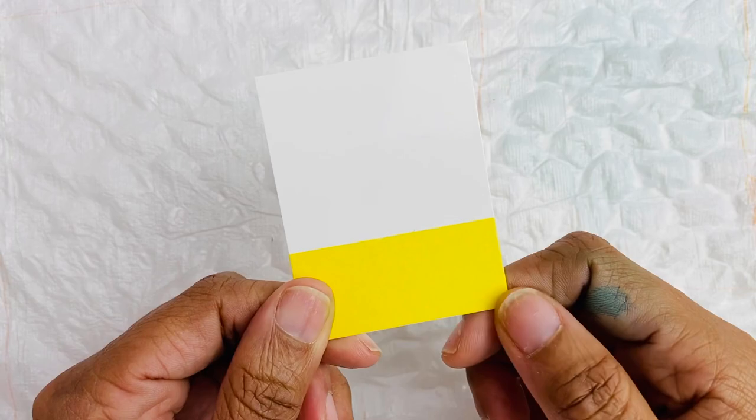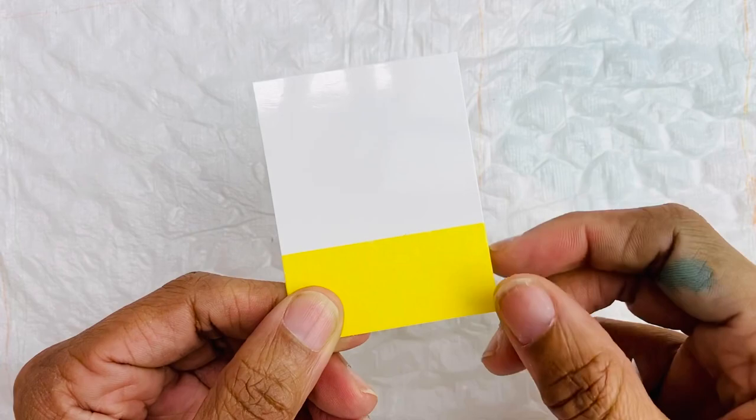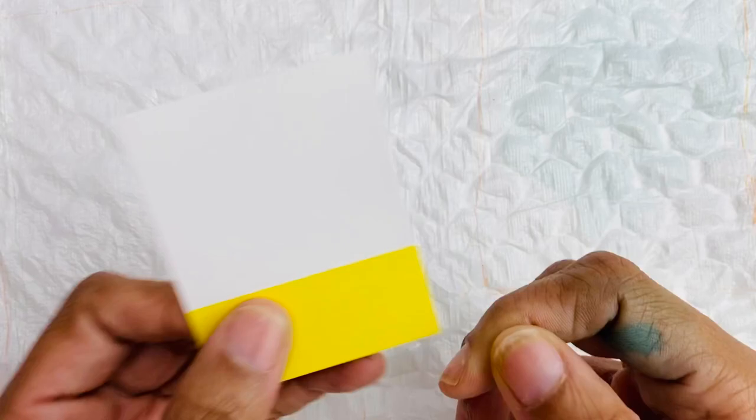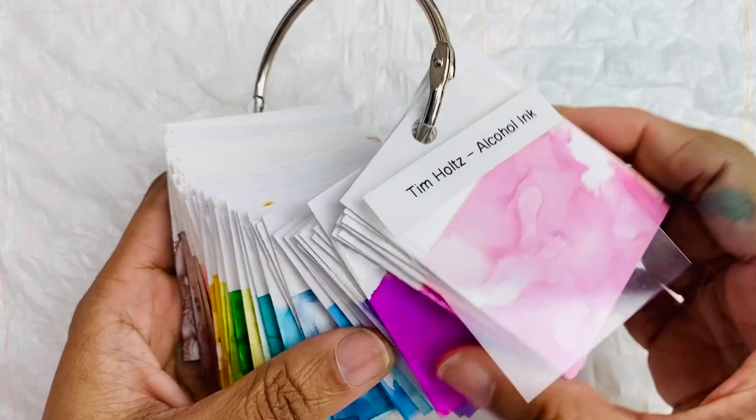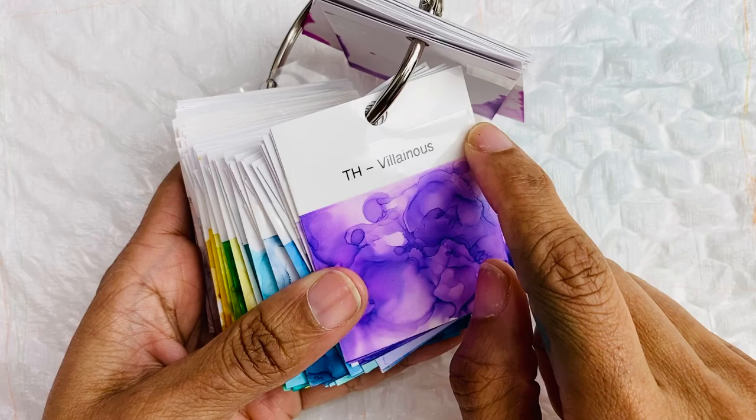You don't have to do this part. If you're comfortable having a looser look on your swatch, you can just label the top wherever you see fit or the bottom, wherever you would prefer. For me, I like the look of having the label butting up right against the top where the alcohol inks stopped. So that's why I use the painter's tape.